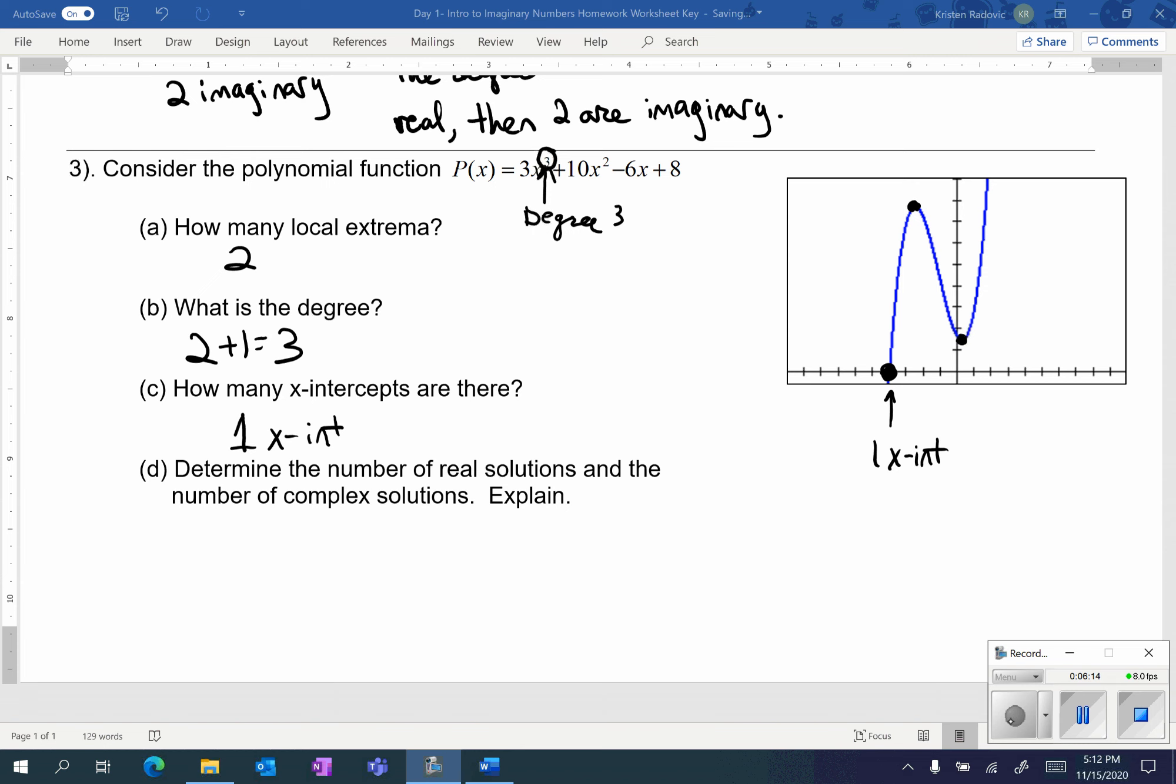Based on that, how many real solutions and how many complex solutions should we have? And keep in mind that complex means imaginary. If we're supposed to have three total and we have one real, that means that two are imaginary.